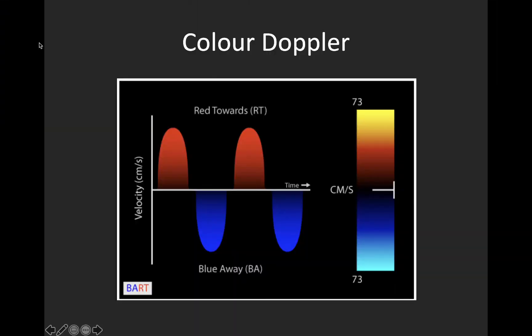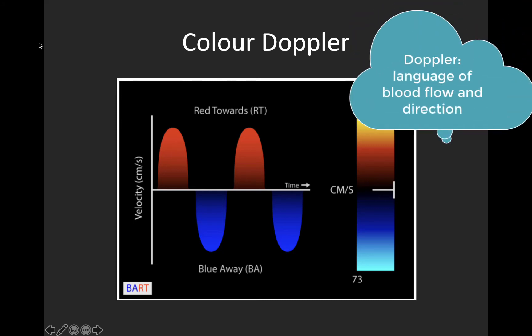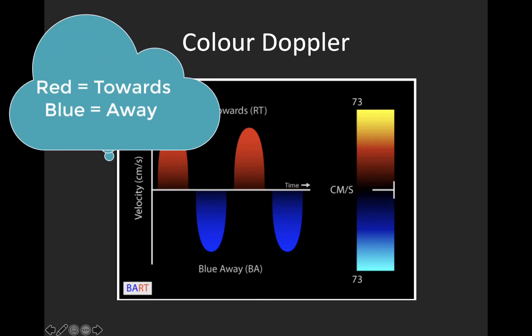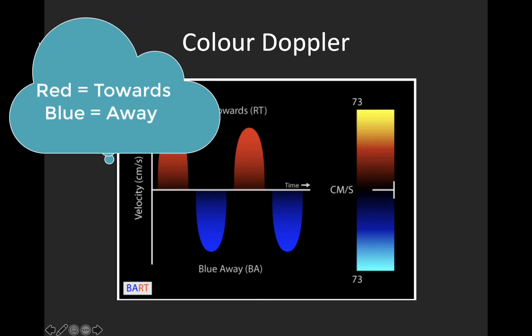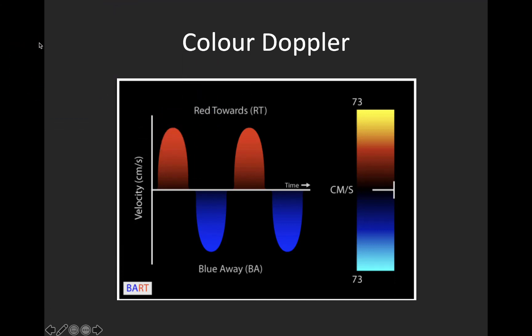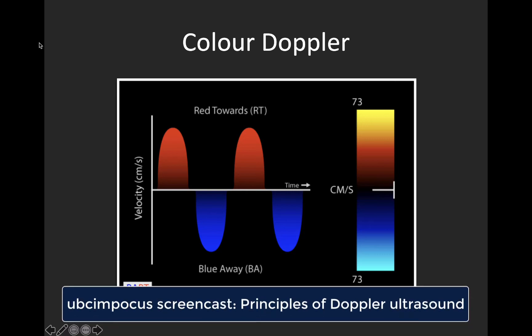Moving on from two-dimensional valve assessment, the next part of a basic valve assessment involves the use of color Doppler. Color Doppler uses a color map to display movement of a reflector — in this case red blood cells — in relation to the stationary probe. By convention, red indicates blood flowing towards the probe and blue indicates blood flowing away from the probe. For more details about Doppler in general and color Doppler, see the screencast on principles of Doppler ultrasound on the UBC-IM POCUS page.